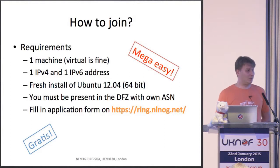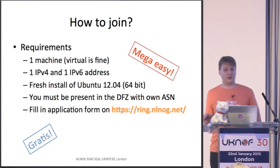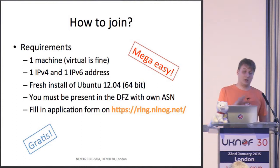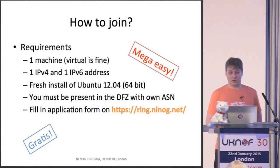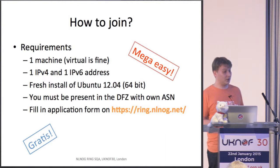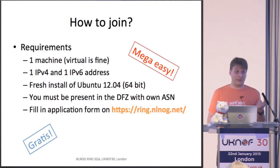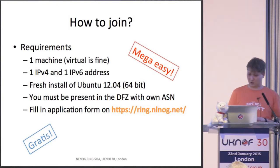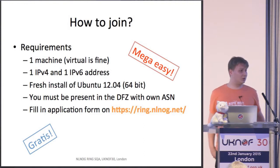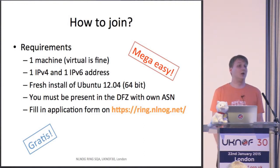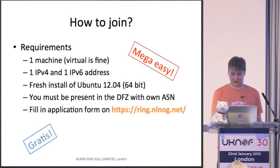The requirements are simple. The bare minimum to join the ring is that you have your own autonomous system number, you are present in the default free zone, you provide a single machine — virtual or physical, it doesn't matter — with one IPv4 and one IPv6 address. The IPv6 address is mandatory. Install Ubuntu 12 on it, and from there we, as ring administrators, will take over, run Puppet over it, and get it integrated with the system.